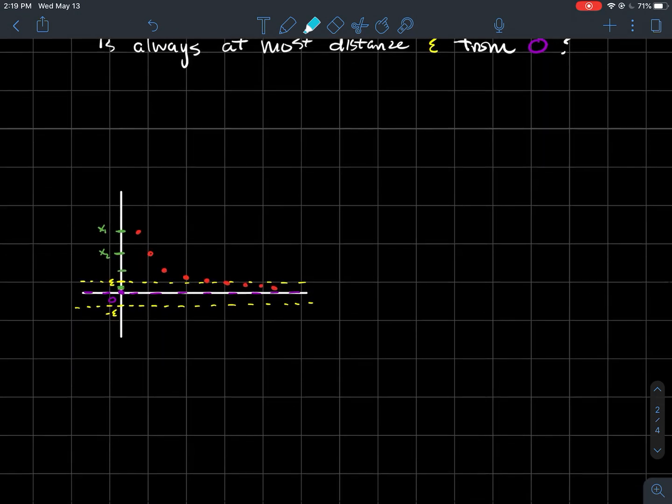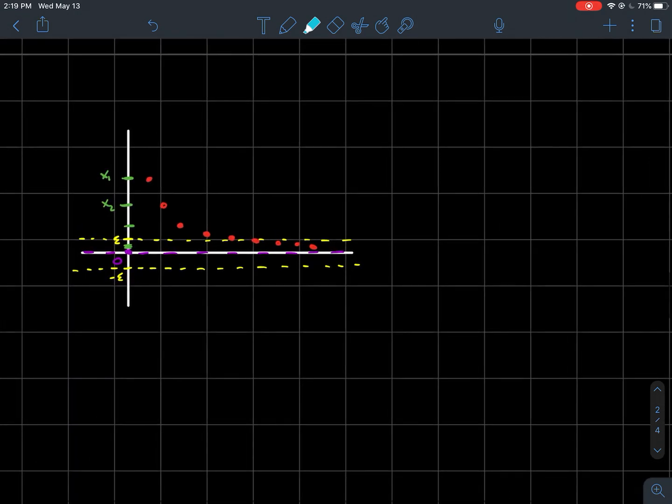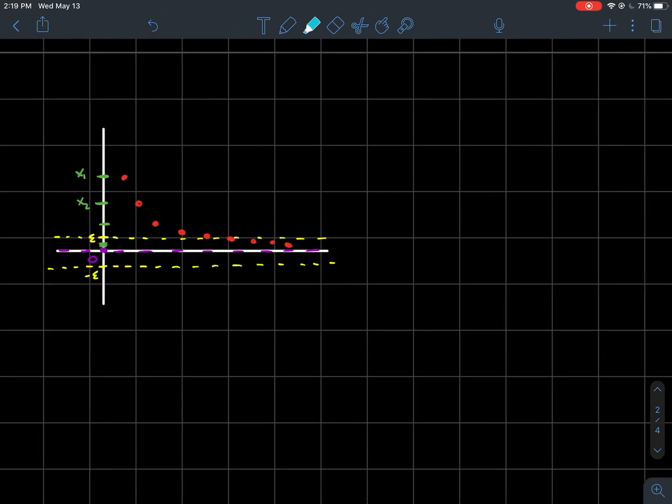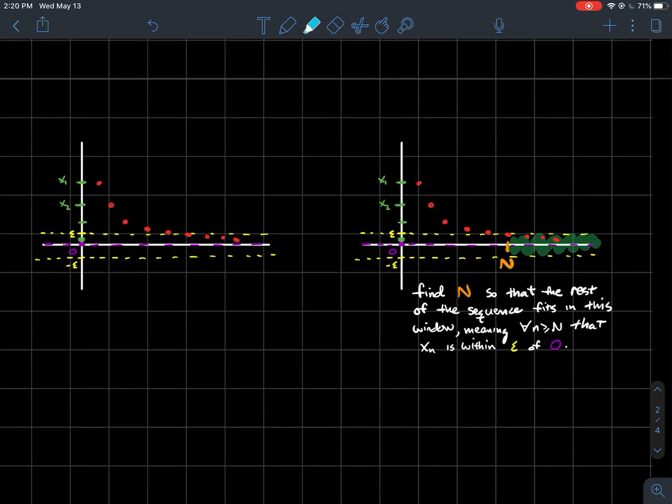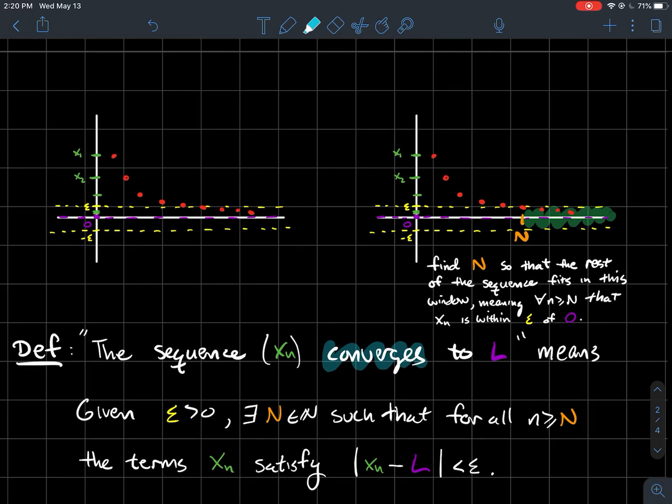So in this case here, if you were to pick any epsilon and you put this little window around zero, which I've drawn for you in yellow, can I find some natural number N so that every one of my sequence points to the right of that is within that little yellow window? And I've drawn that picture for you over here. It looks like whatever that N there in orange is, once you're past that, every red point to the right is within that little epsilon window.